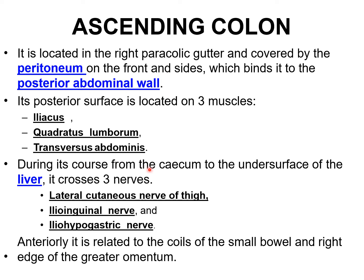During its course from the cecum to the under-surface of the liver, the ascending colon crosses three nerves: the lateral cutaneous nerve of the thigh, the ilioinguinal nerve, and the iliohypogastric nerve. Anteriorly it is related to the coils of small intestine and the right edge of the greater omentum.